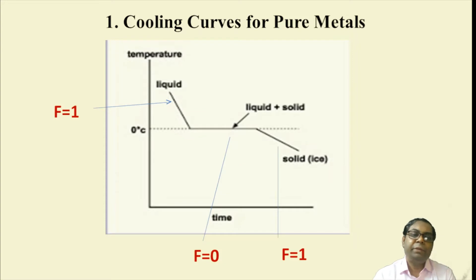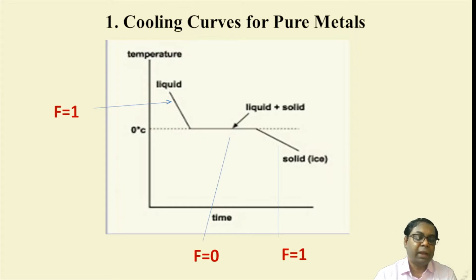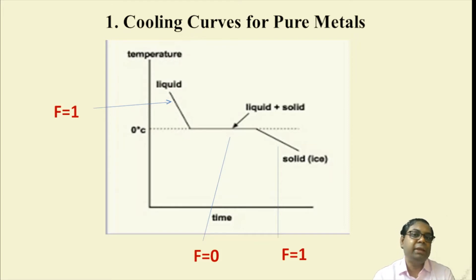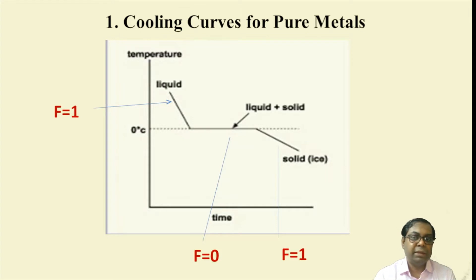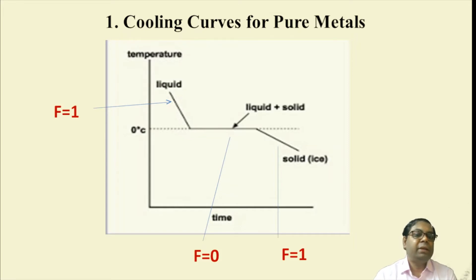These figures have been collected from various internet sources and books. This is the cooling curve for pure metal. From a pure liquid state, with the reduction in temperature over time, it gradually reaches a particular solidification temperature. When solidification starts, until the entire liquid is converted to 100% solid, there is no change in temperature. After the entire mass is completely solidified, the temperature of the mass will reduce further.